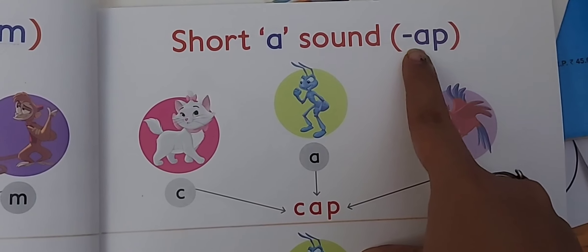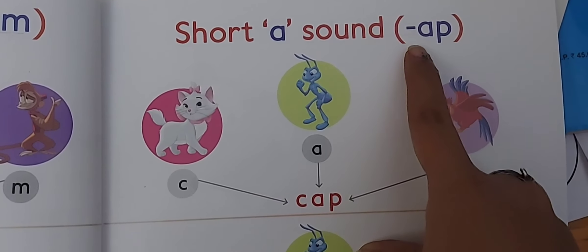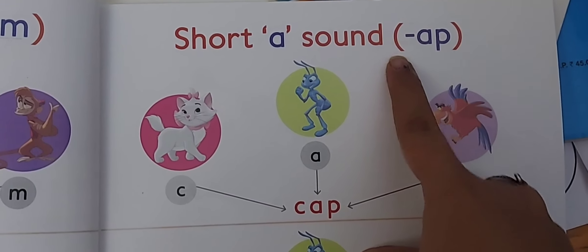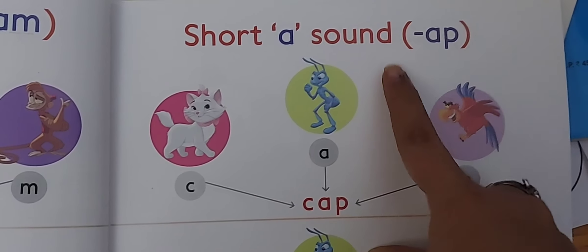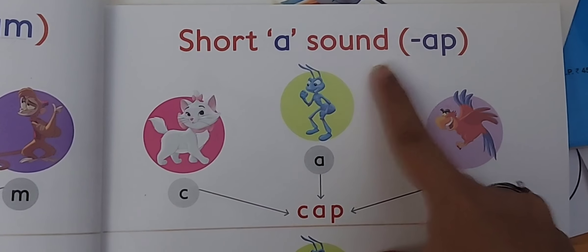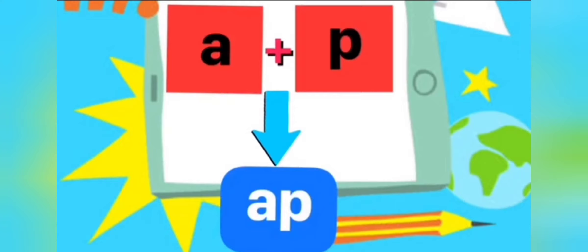Together they make 'app,' 'app.' Together they make 'app.' So kids, A plus P is equal to app.